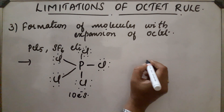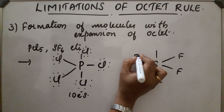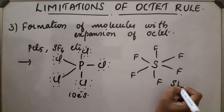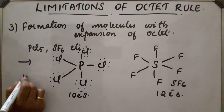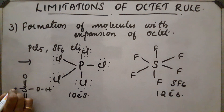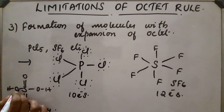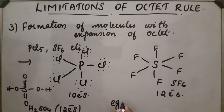In SF6, sulphur contains 12 electrons in its valence shell after covalent bond formation, so this also violates the rule. There are also other examples — in H2SO4, sulphur likewise contains 12 electrons in its outermost shell, which also violates the rule. However, in some cases sulphur does obey the octet rule, for example in SCl2, where it follows the octet.